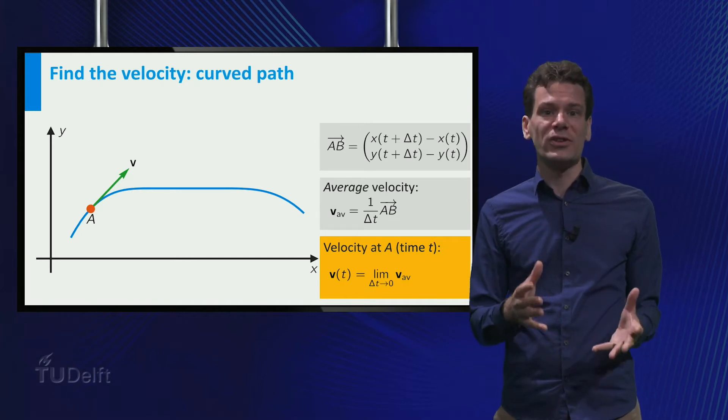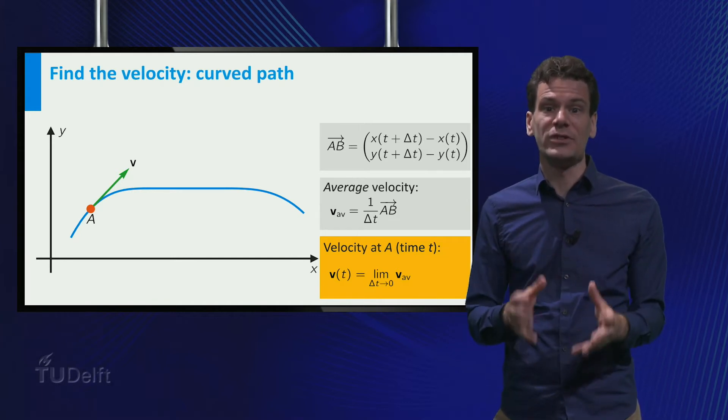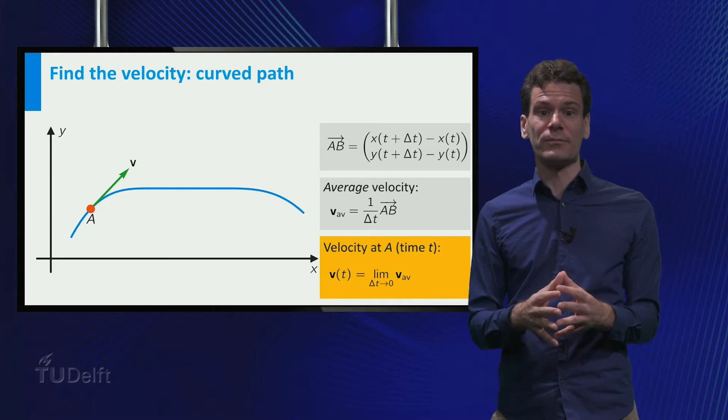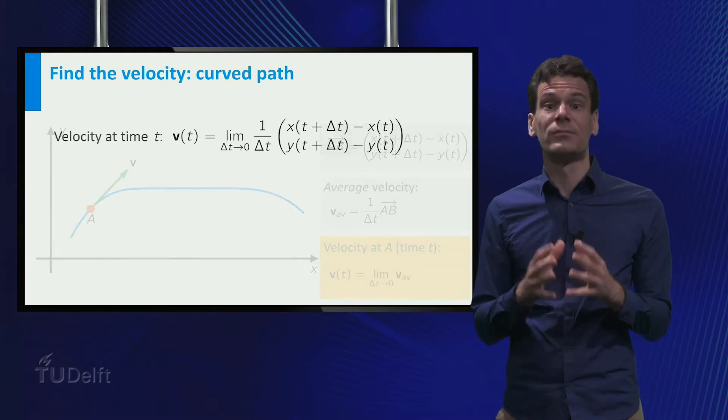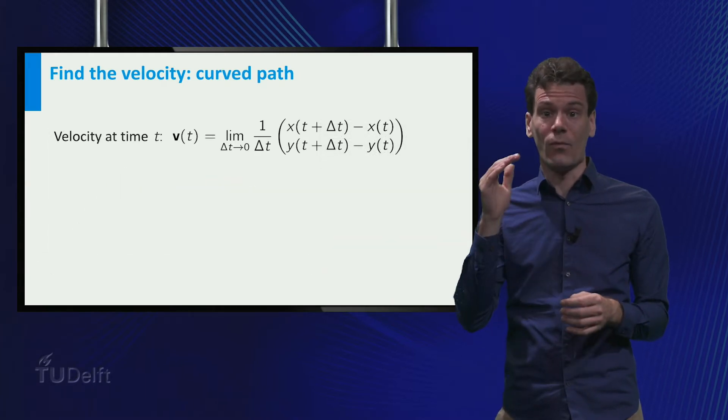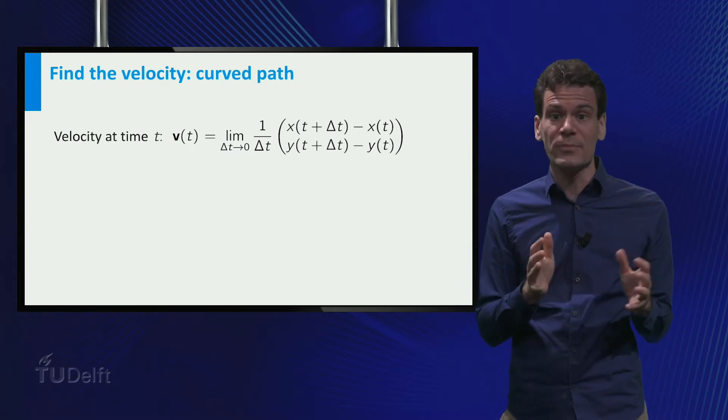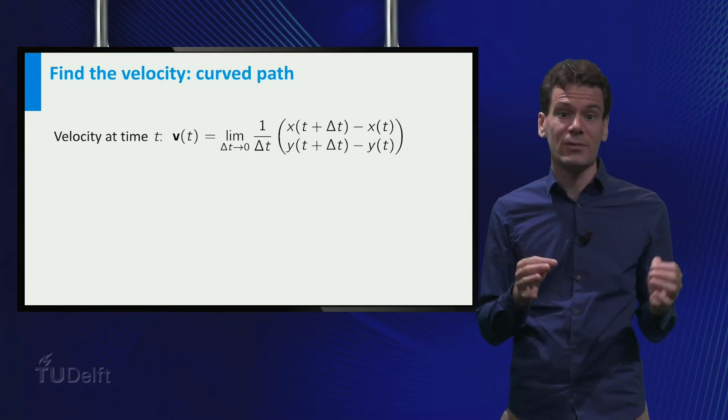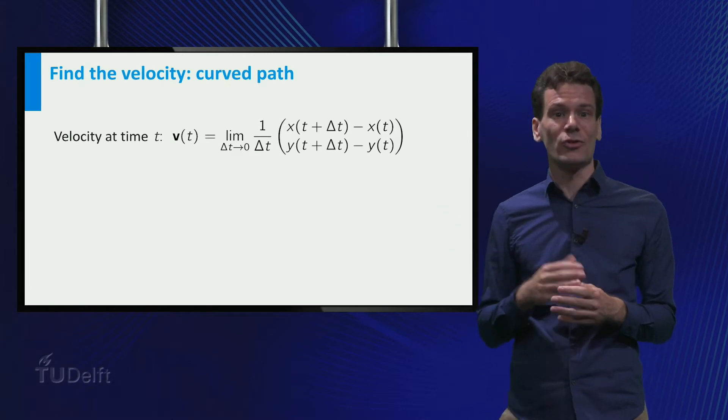If you combine all this information, you see that v(t) can be calculated as follows. It is the limit for Δt to zero of 1 divided by Δt times the displacement vector from A to B, which is indicated explicitly on the screen.